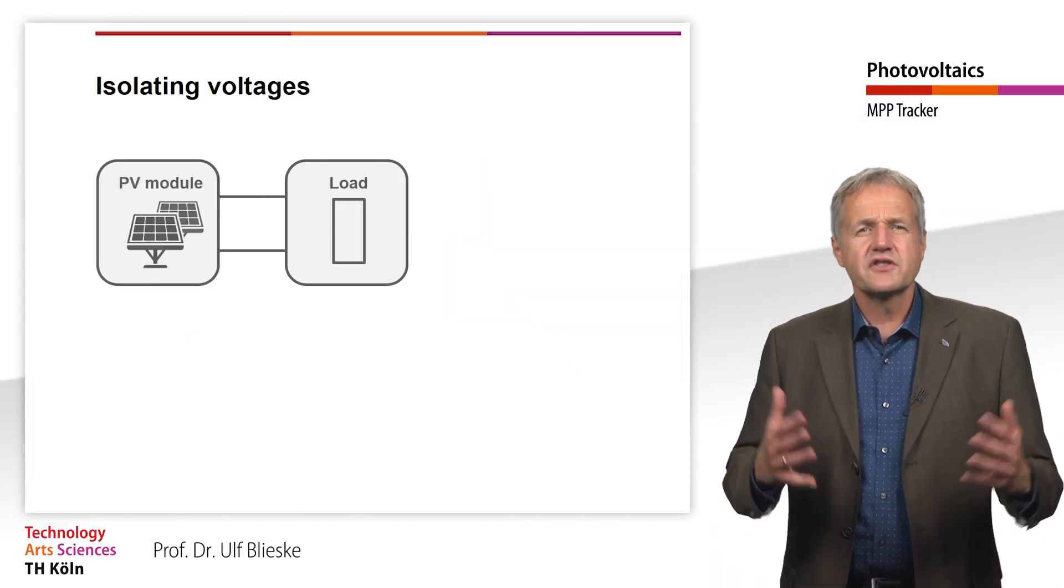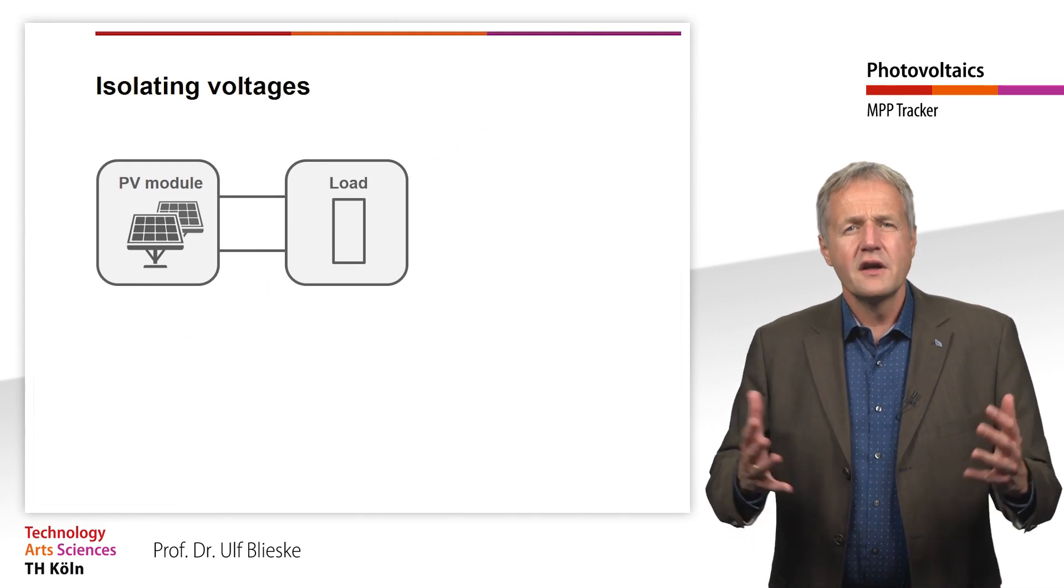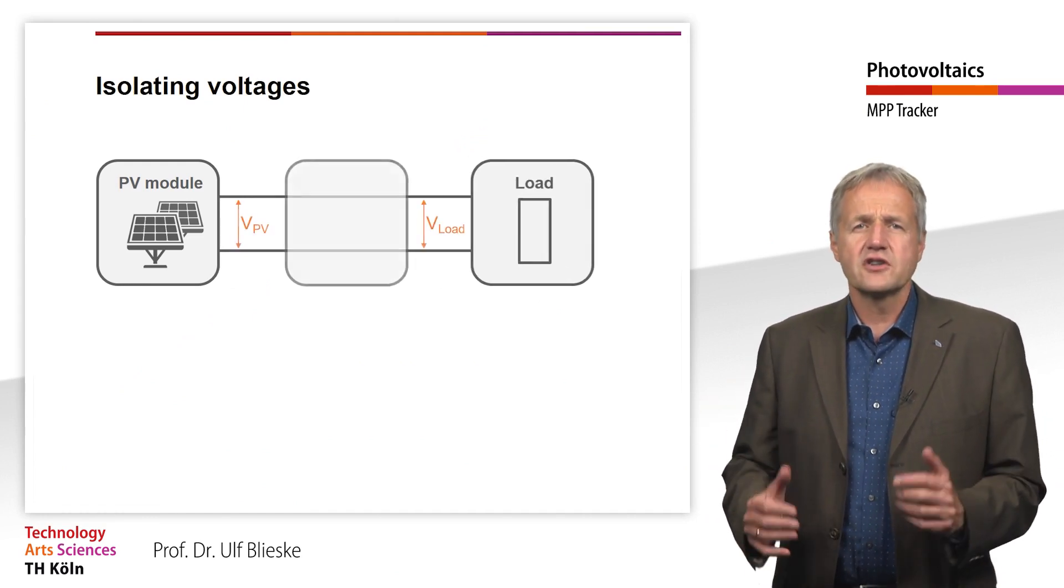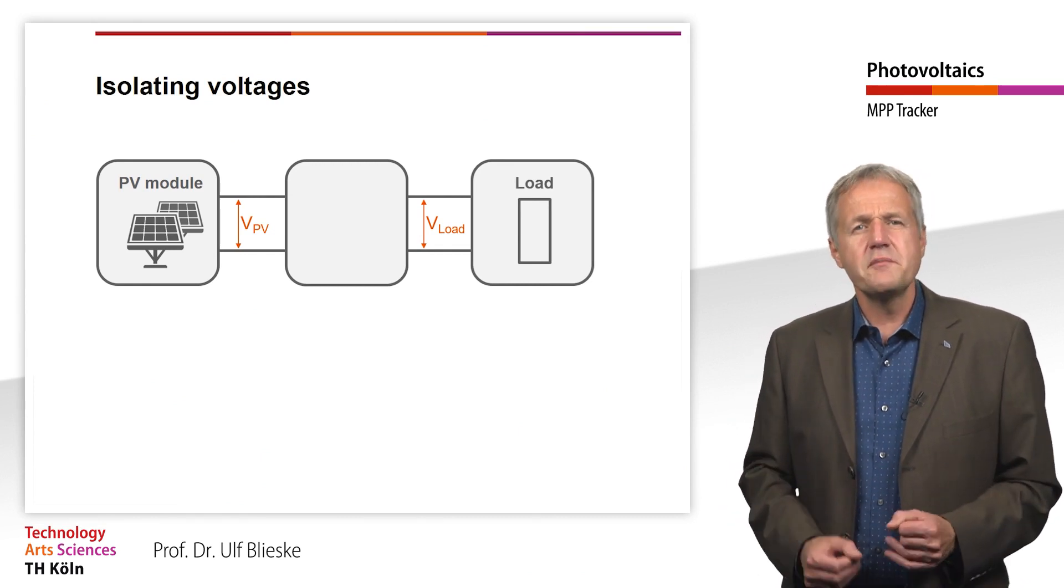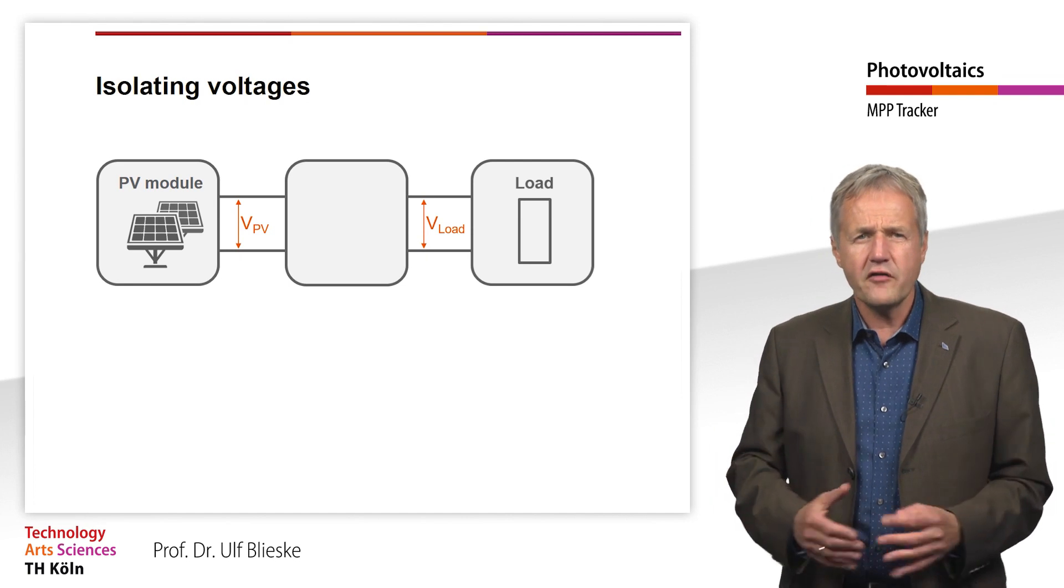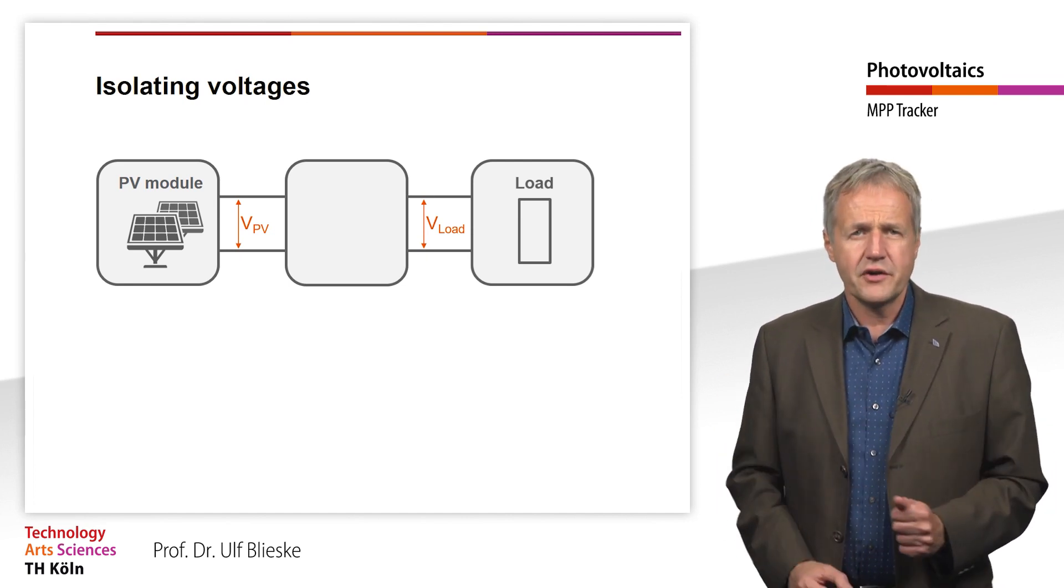In practice, the voltage at which the module is operated is therefore decoupled from the voltage of the consumer. This way the module can be operated at the point of maximum power regardless of the irradiance.